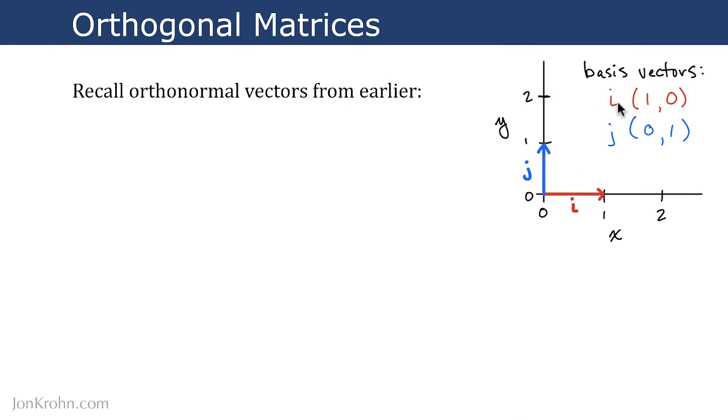And so basis vectors are the most common type of orthonormal vector, but you could have orthonormal vectors that aren't basis vectors, such as orthogonal vectors that don't occur directly on the x- and y-axis.